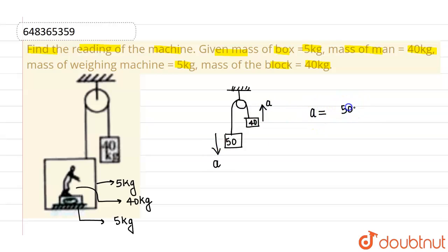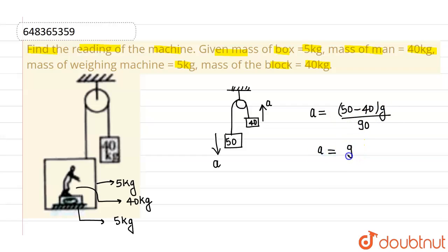The acceleration is given by (higher mass − lower mass) × g divided by total mass. So the acceleration comes out to be g/9. This particular side is descending with an acceleration of g/9.